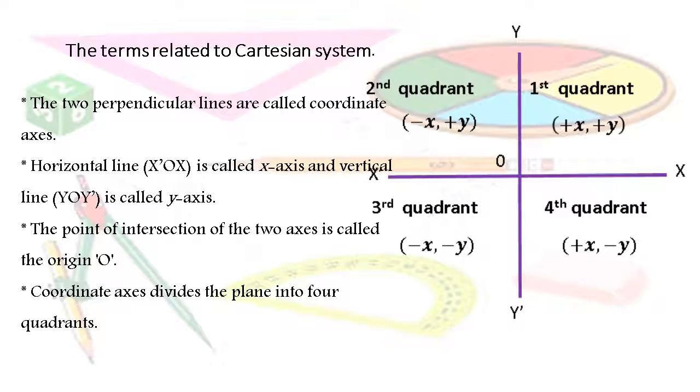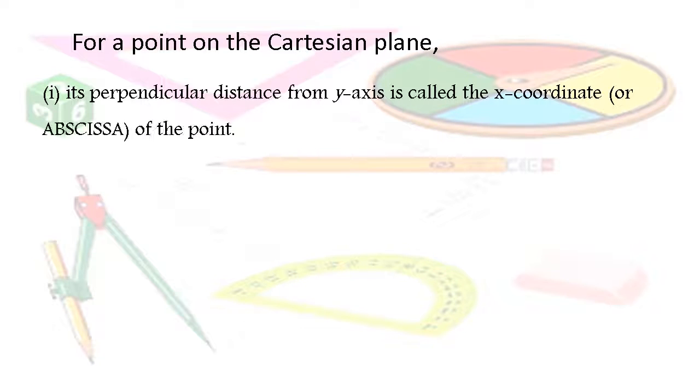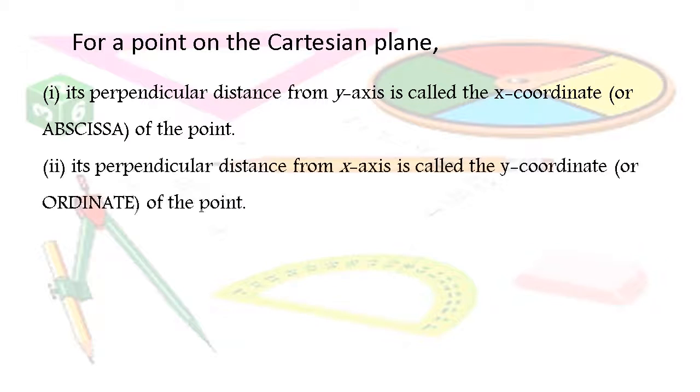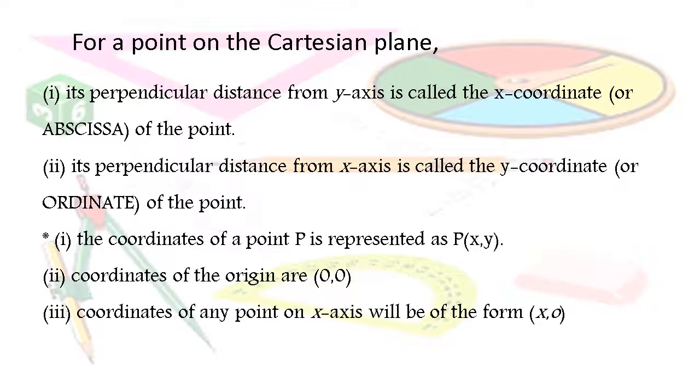Coordinate axes divide the plane into four quadrants. For a point on the Cartesian plane, its perpendicular distance from the y-axis is called the x-coordinate or abscissa of the point. Its perpendicular distance from the x-axis is called the y-coordinate or ordinate of the point. The coordinates of a point P are represented as P(x,y).